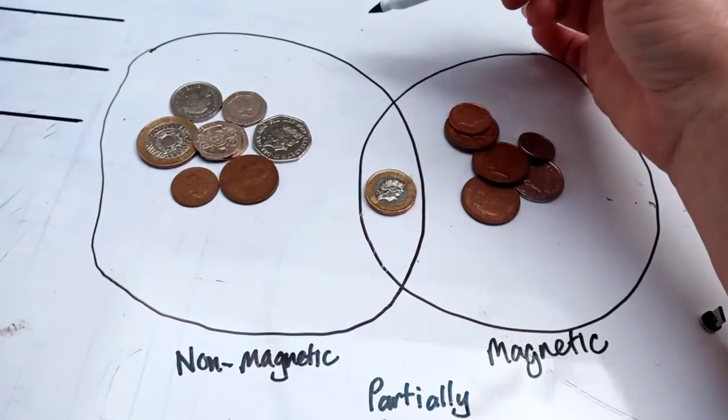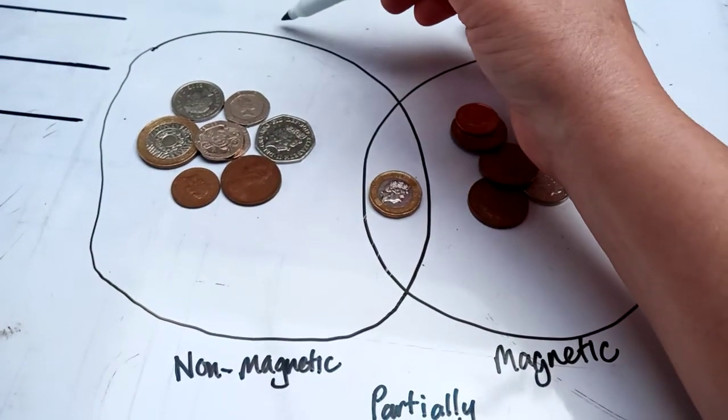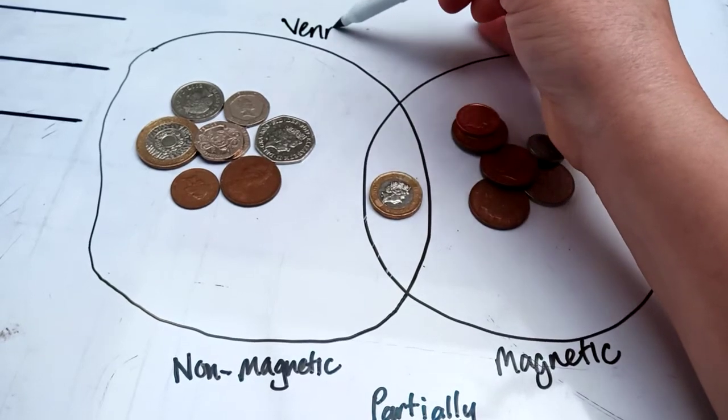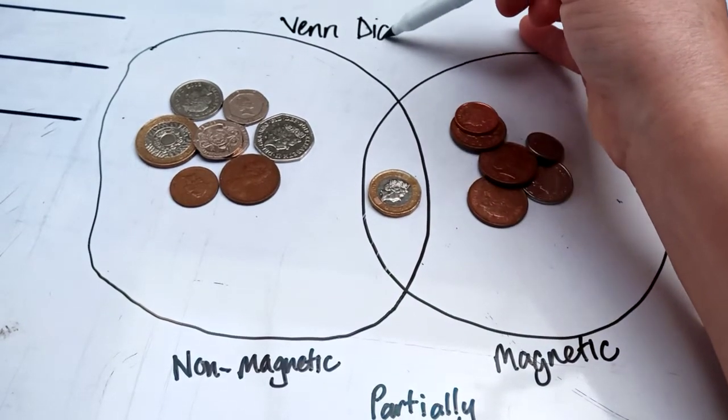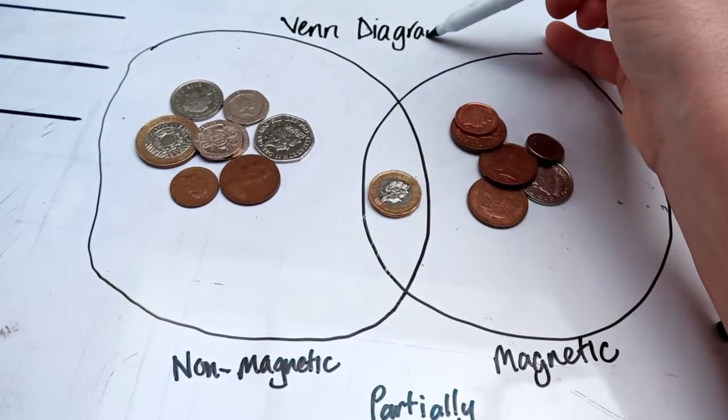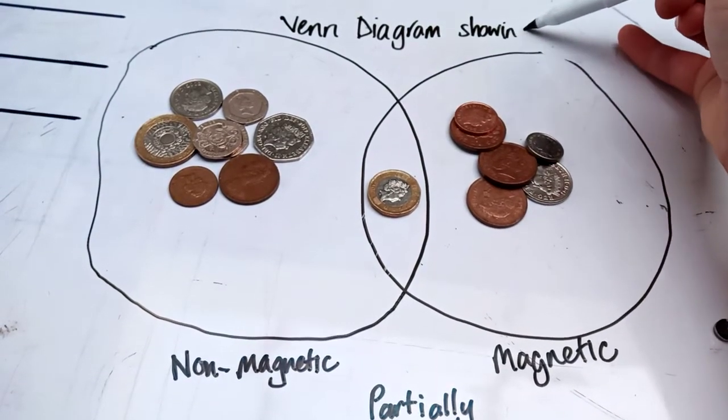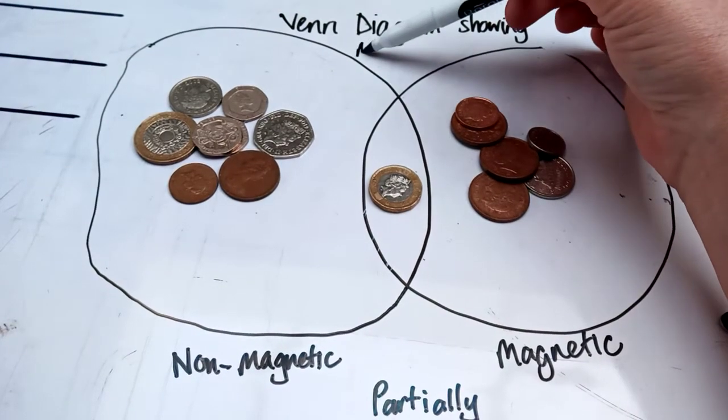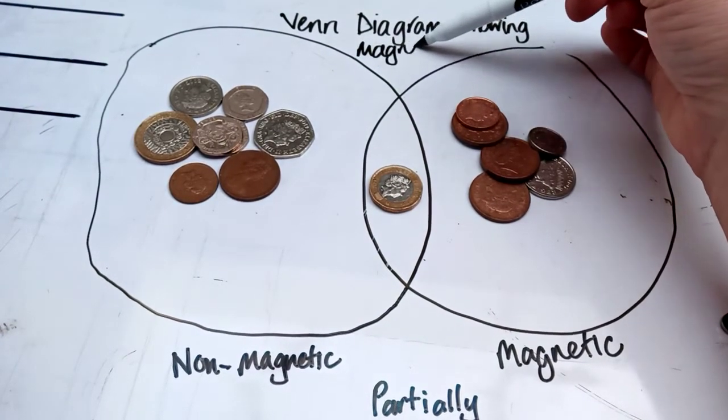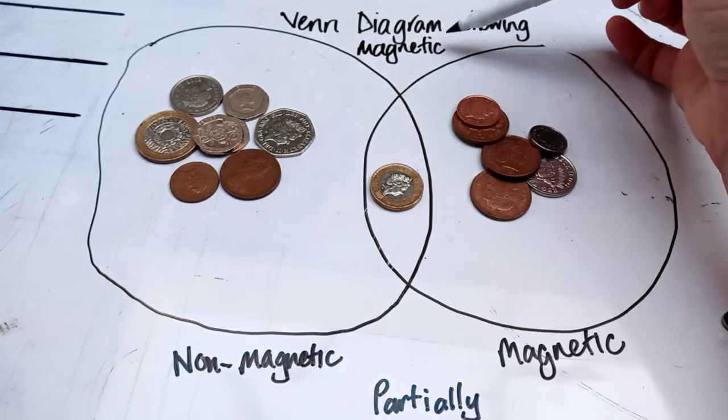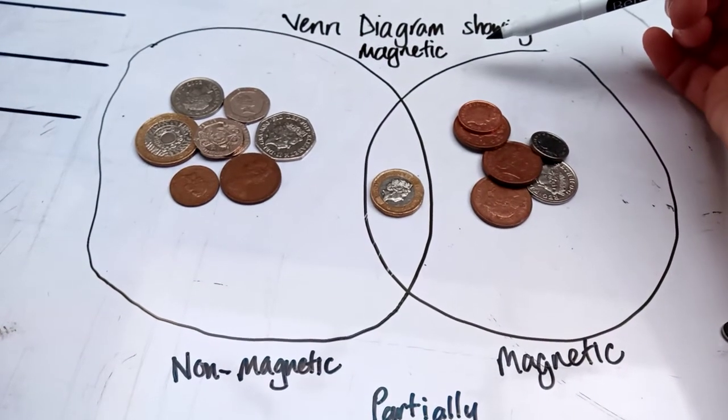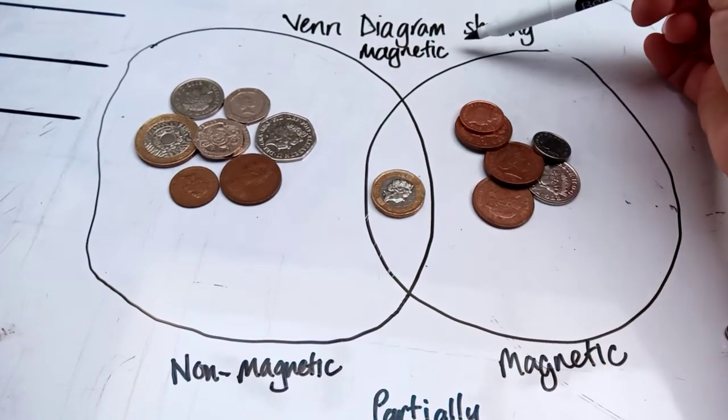And one last thing, we need to write a title. What would this title be? It's a Venn, capital V, it's a Venn diagram showing what's it showing? Showing magnetic, can we call it magnetic properties, magnetic coins, magnetic, I've got quite a lot of properties, showing magnetic properties.